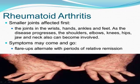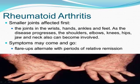Because it can affect multiple other organs of the body, rheumatoid arthritis is referred to as a systemic illness and is sometimes called rheumatoid disease. The smaller joints are affected first — early rheumatoid arthritis tends to affect the joints in the wrists, hands, ankles, and feet. As the disease progresses, the shoulders, elbows, knees, hips, jaw, and neck also become involved. In most cases, symptoms occur symmetrically in the same joints on both sides of the body.